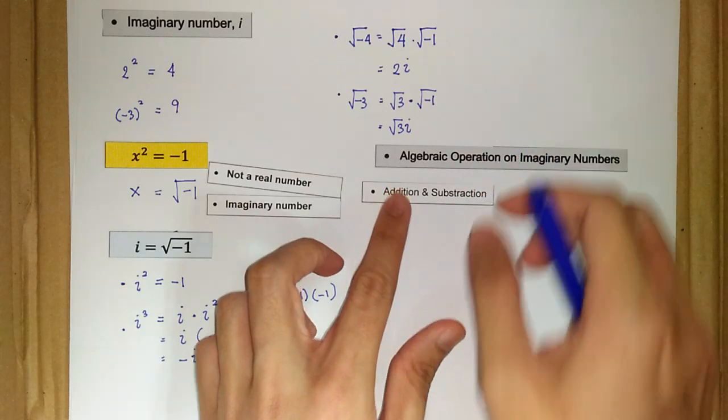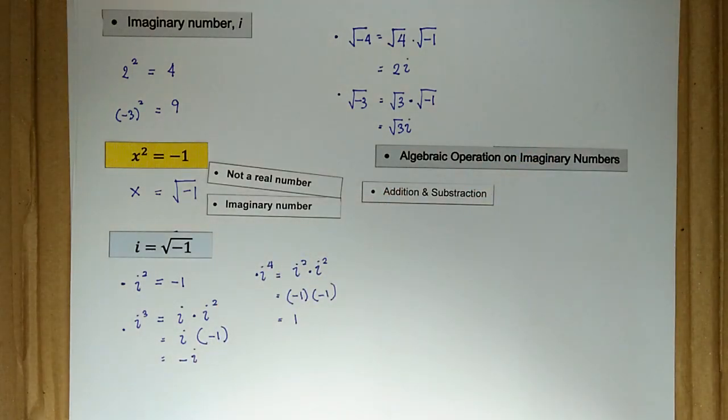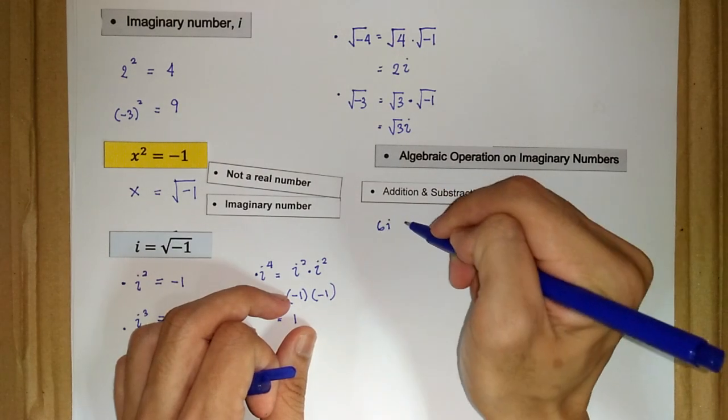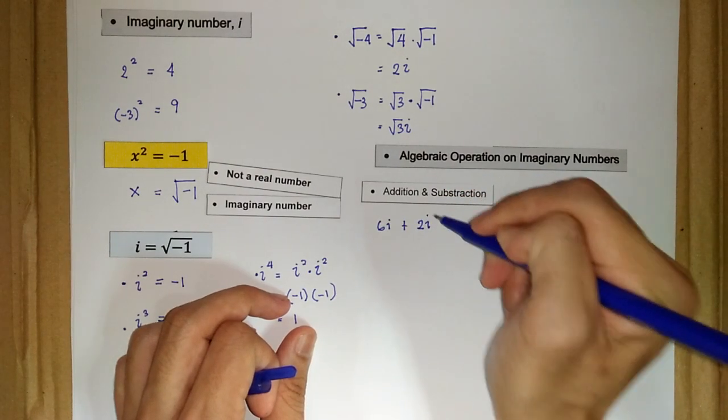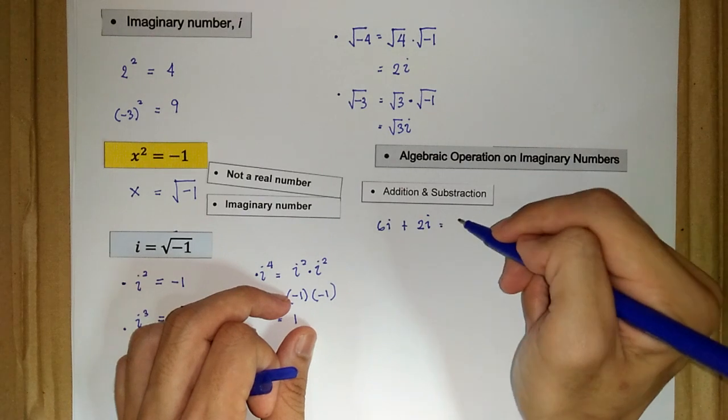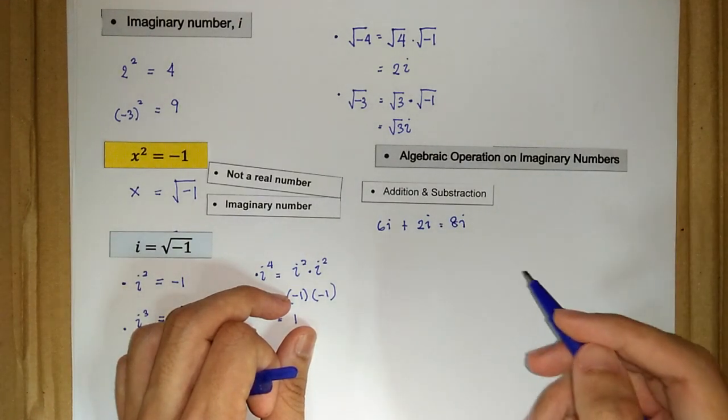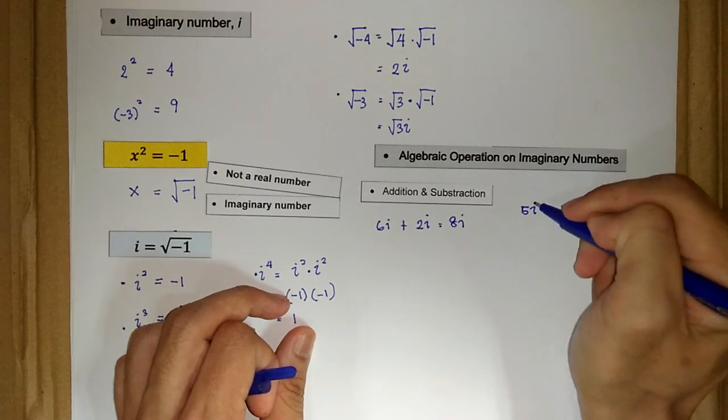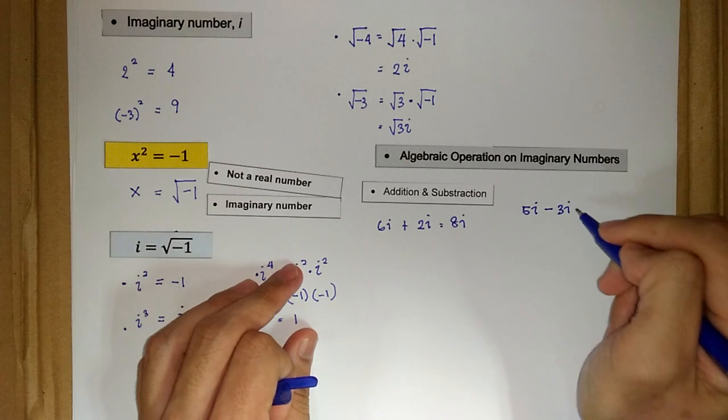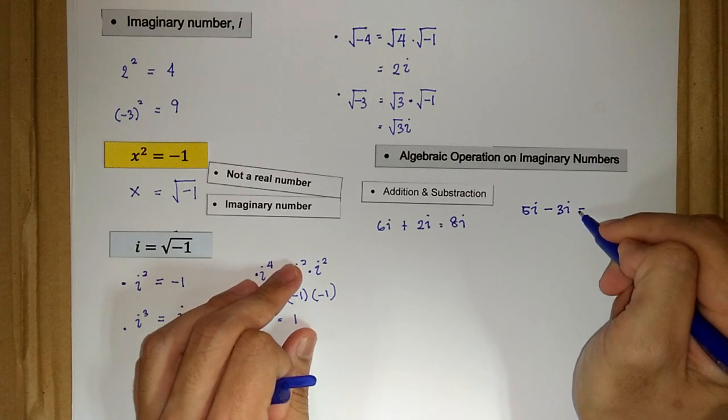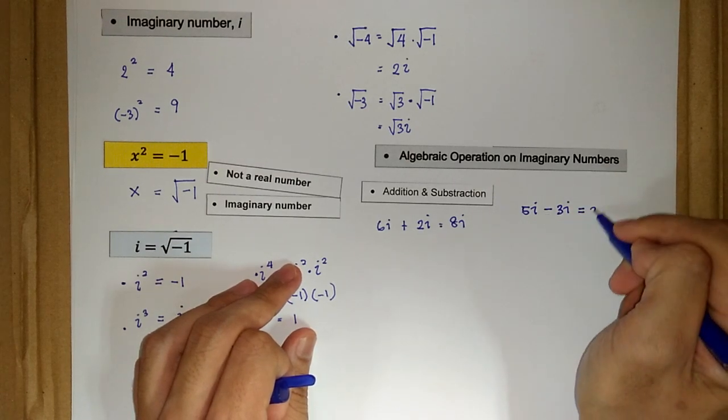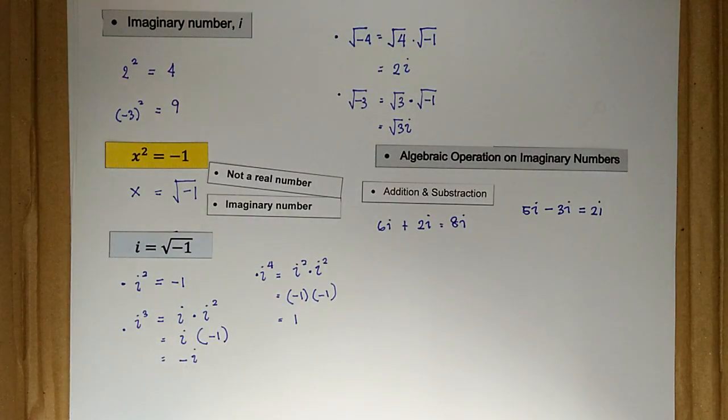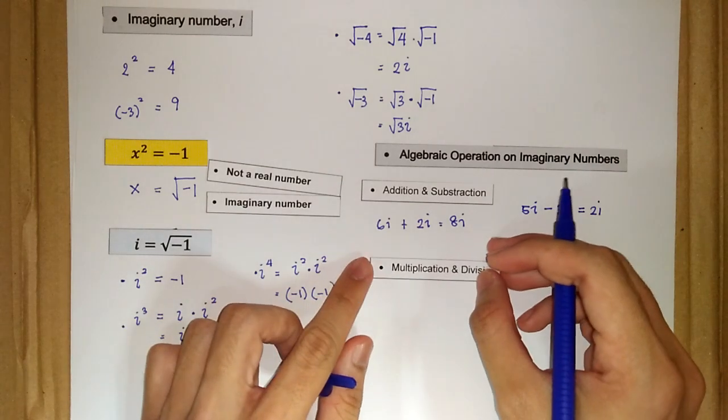We may add and subtract imaginary numbers. For instance, 6i plus 2i is equal to 8i. And 5i minus 3i gives us 2i.